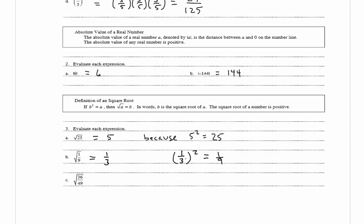In c we have the square root of 36 divided by 49, and that's equal to 6 over 7. If you were to take 6 over 7 and square it, we would get back to 36 over 49.